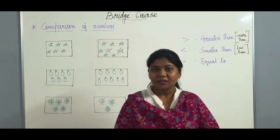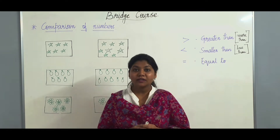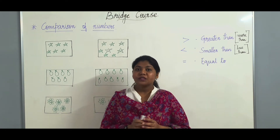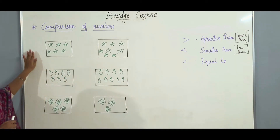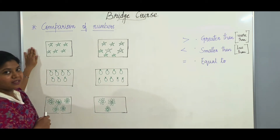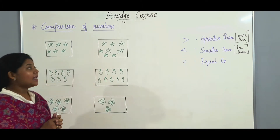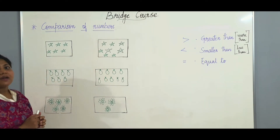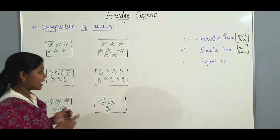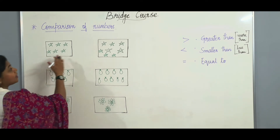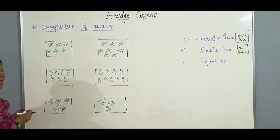So before comparing the numbers, let us compare a few pictures which will be easy for us to learn to use the signs. On the board here, on the left side I have a few stars and on the right side I have a few more. Now let us see which side has more number of stars. We have to count each side and then compare which side has more.